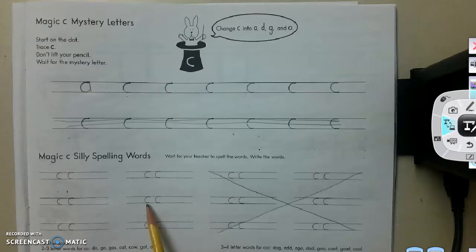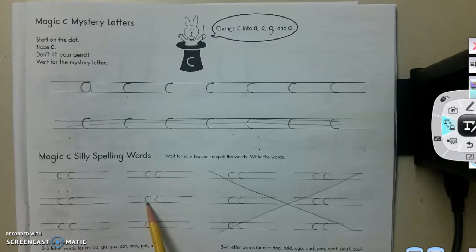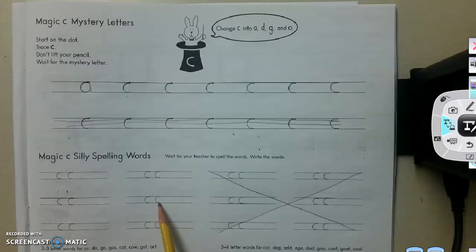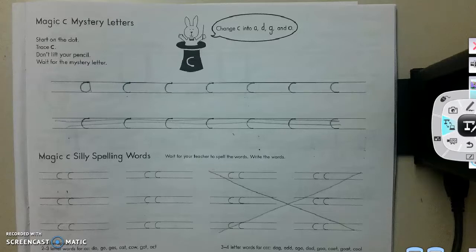Okay, next word. ACT. I ACT appropriately in school. ACT. A-C-T. ACT. Okay. Alright. Let's do one more word. This is a short one. GO. G-O-GO.